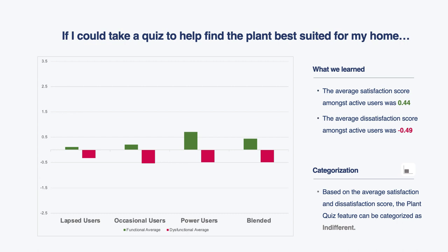Looking at what response data actually looks like: for the plant quiz example, we got a tepid response — not a lot of opportunity for increased satisfaction, and on the dissatisfaction side, just a muted response. There's just not a whole lot going on here. You might categorize the plant quiz as an indifferent feature — if we implemented it, it doesn't appear it would dramatically improve the user experience.